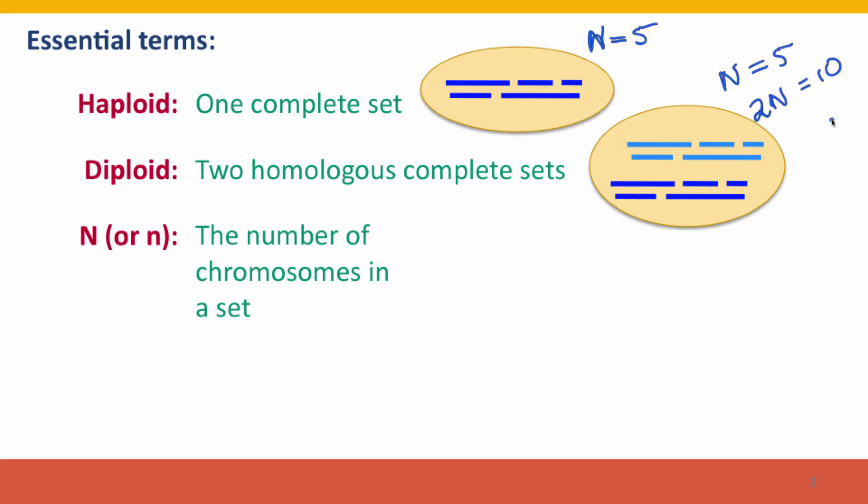For humans, n equals 23, and we are diploid, so we normally have 2n equals 46 chromosomes.